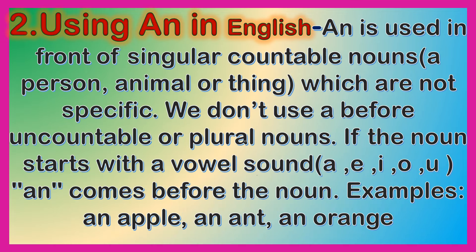Using 'an' in English: 'an' is used in front of singular countable nouns — a person, animal, or thing — which are not specific. We don't use 'an' before uncountable or plural nouns. If the noun starts with a vowel sound (a, e, i, o, u), 'an' comes before the noun. Examples: an apple, an ant, an orange.